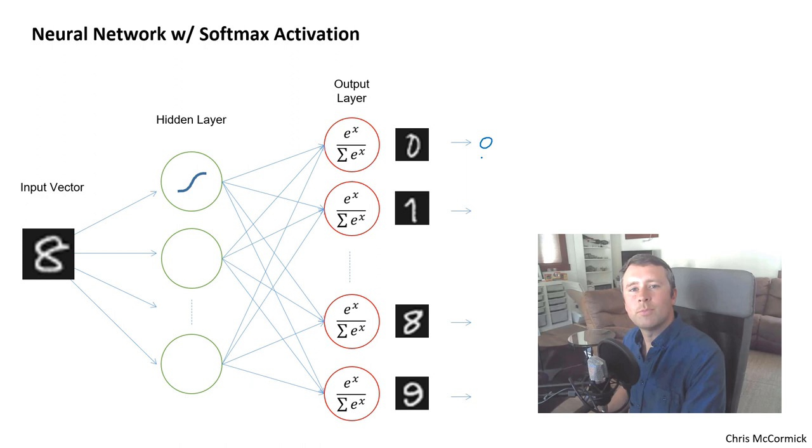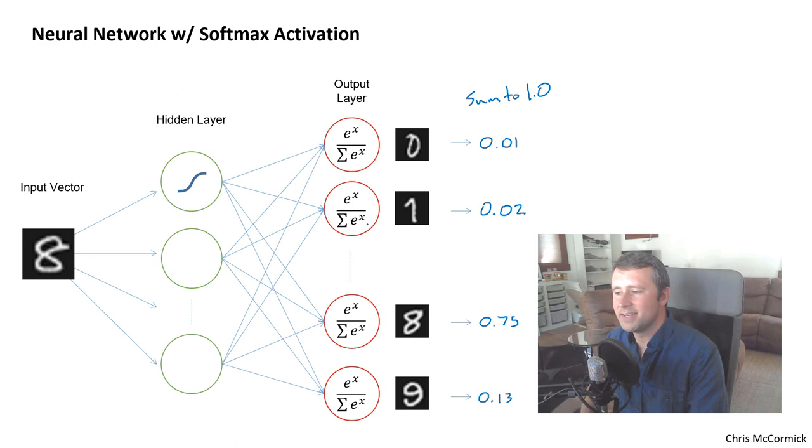And for each of those, you get some value that reflects the probability that the model thinks that the input is that digit. So let's say 0.01, 2% chance that it's the digit 1. And if it's trained well, then hopefully this is a nice high value, maybe 75%, and maybe 13% there. And so these are all probabilities. And the softmax function guarantees that these all sum to 1.0. So you get a probability distribution over the outputs. And the way that it does this is with this denominator term of the softmax function. So to calculate the activation value for the number 0, we take the output of the hidden layer and multiply it with the weights for this output neuron and then apply the exponential function as an activation. But then we also have to divide that by the sum of the activation values for all 10 digits.